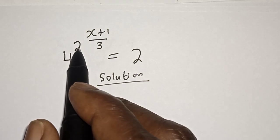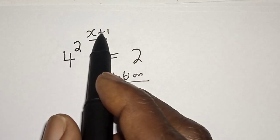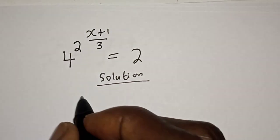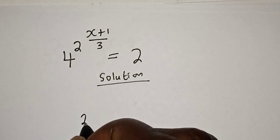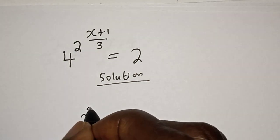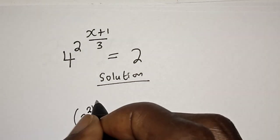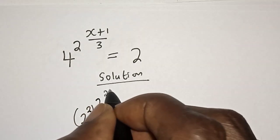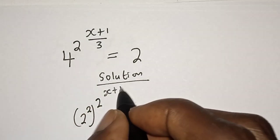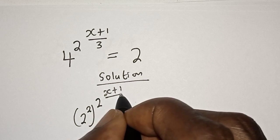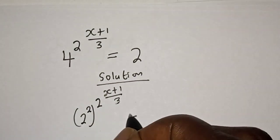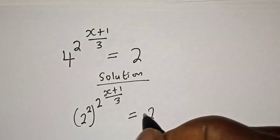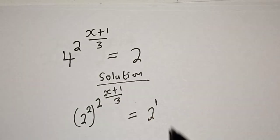4 raised to the power of 2 to the power of x plus 1 over 3 can be rewritten by expressing 4 as 2 squared. So we have 2 raised to the power of 2, raised to the power of 2 to the power of x plus 1 over 3, is equal to 2, which is also 2 to the power of 1.